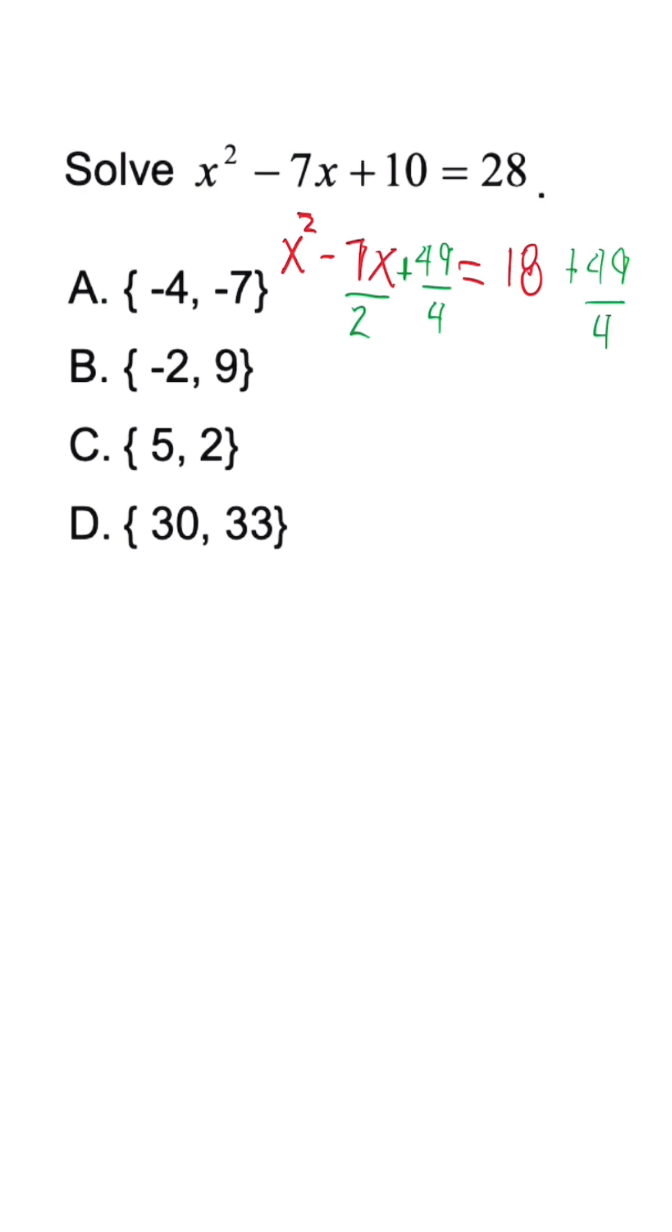Now when we break the trinomial back down to its binomial, this turns into x minus 7 over 2 squared is equal to 72 over 4 plus 49 over 4. When I simplify this further, we're going to get x minus 7 over 2 squared is equal to 121 over 4. So we'll use the square root property now.